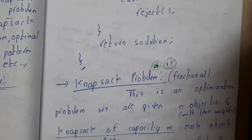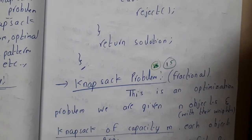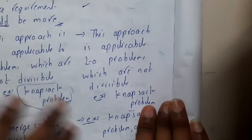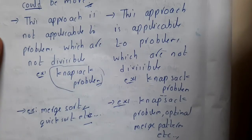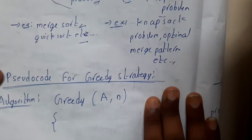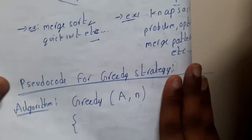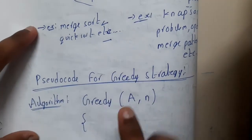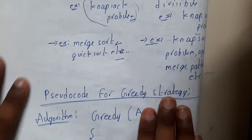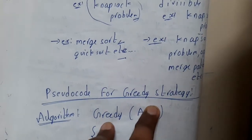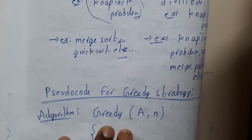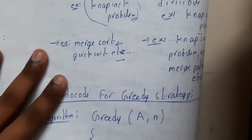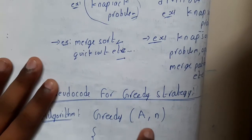So I hope everyone got a clear idea on the differences. Now let us go through the pseudo-code for the greedy strategy. We all know that the greedy strategy will check only locally and not globally. So: greedy(A, n) — assume A is an array and n is the length of the array.